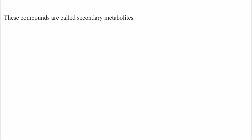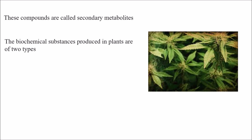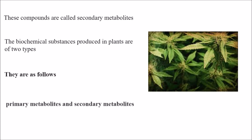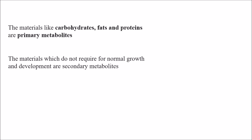These compounds are called secondary metabolites. The biochemical substances produced in plants are of two types: primary metabolites and secondary metabolites. Materials like carbohydrates, fats, and proteins are called primary metabolites. Materials that are not required for normal growth and development are called secondary metabolites. Examples of secondary metabolites include alkaloids, tannins, resins, gums, and latex.